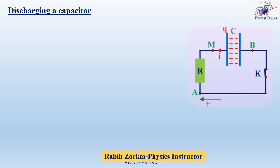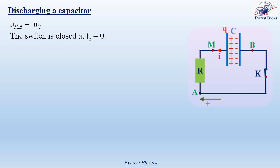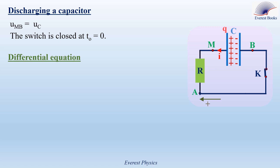Determination of the differential equation governing the variation of UC during discharging of a capacitor. Consider a resistor of resistance R and a switch K connected in series across a charged capacitor. The voltage across the capacitor is UMB equal to UC, and the switch is closed at time equal to 0. To determine the differential equation, we use Kirchhoff's voltage law: UAM plus UMB equals UAB. Since we have a connecting wire between A and B, UAB equals 0. The positive sense is oriented from A to M through the resistor.